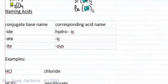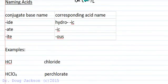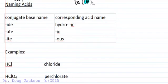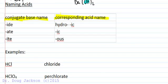When naming acids, bases are named using ionic naming rules — for example, lithium hydroxide, sodium hydroxide, calcium hydroxide. For naming acids, we use special names derived from the name of the conjugate base. If the conjugate base ends in '-ide', the acid name is 'hydro-[stem]-ic acid'. If it ends in '-ate', it becomes '-ic acid'. If it ends in '-ite', it becomes '-ous acid'.